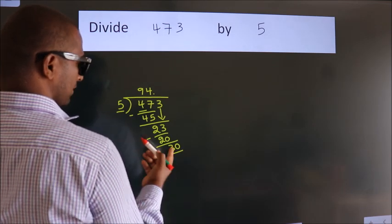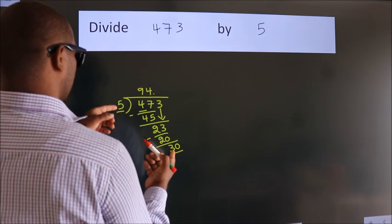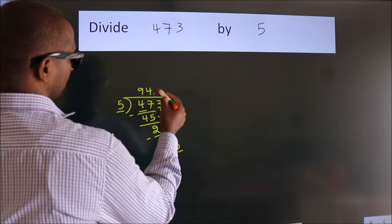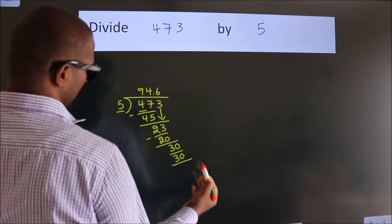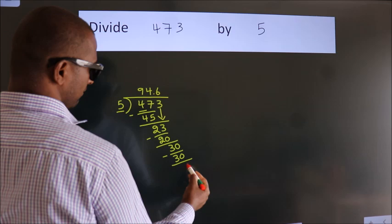When do we get 30? In 5 table, 5, 6, 30. Now we subtract, we get 0.